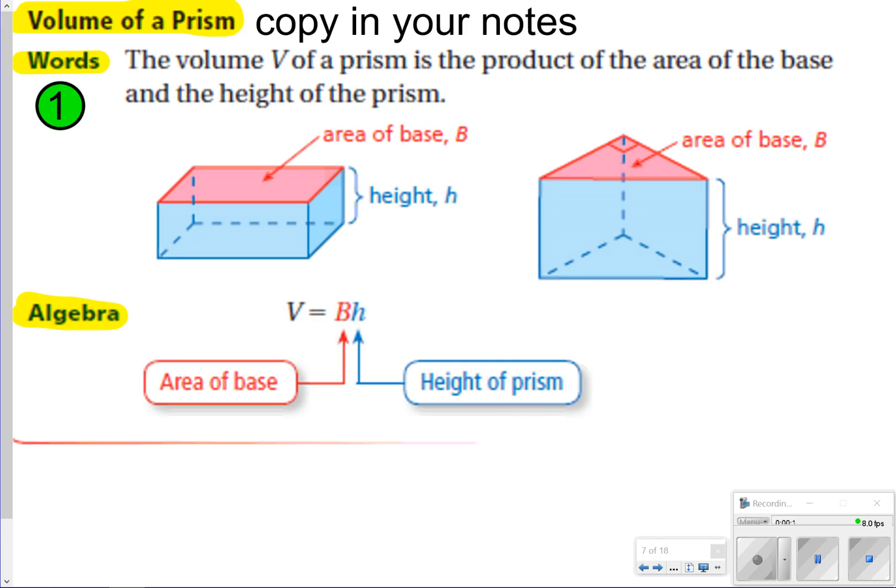The first thing we want to write down is how to find the volume of a prism. This is going to be your cut and dry how to find the volume of a prism. You're going to be finding the area of the base and then multiplying it by the height. Notice that area of the base is a capital B, and then height is just a normal h.